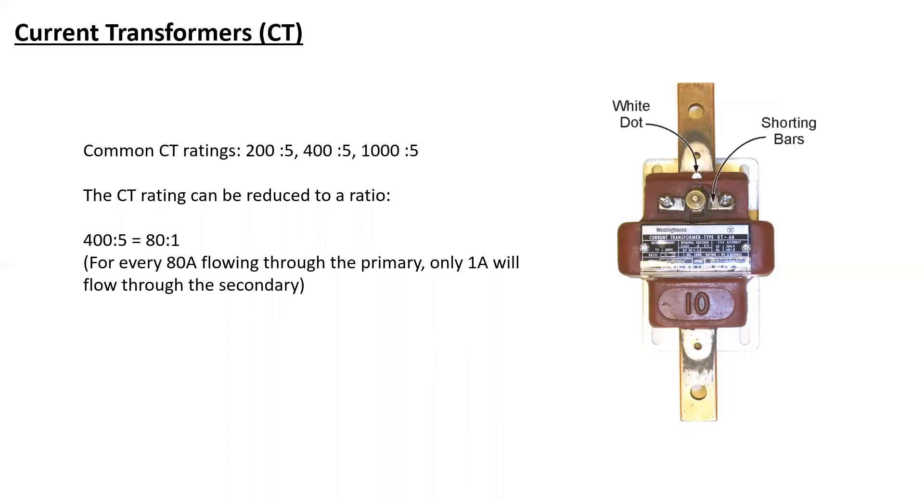And that's because these were primarily used for utility metering. And the utility's energy meters would be calibrated to accept a maximum value of current. Now, it does not mean that this particular CT can handle a maximum of 400 amps. It can handle quite a bit more. So, with this ratio of 80 to 1, it means that for every 80 amps that flows through the primary, one amp will flow through the secondary.